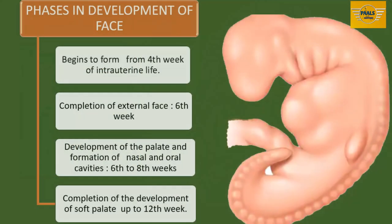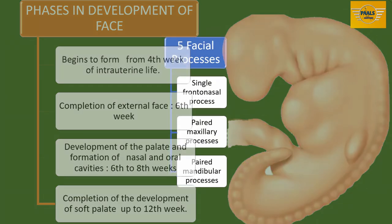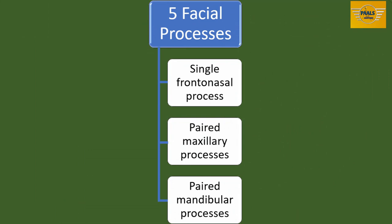The human face actually begins to form during the fourth week of embryonic development. By the sixth week, the external face is completed. From the sixth week to eighth week, we will be looking at the development of the palates. And then by around the twelfth week, we will be looking at the completion of the soft palates. The face develops from five swellings or processes located around the primitive mouth, which is called the stomatodeum.